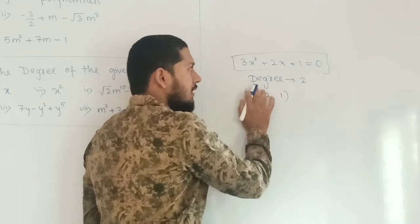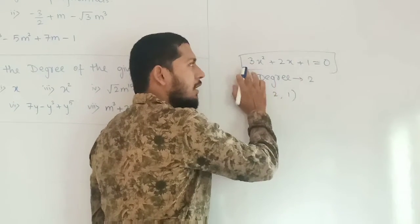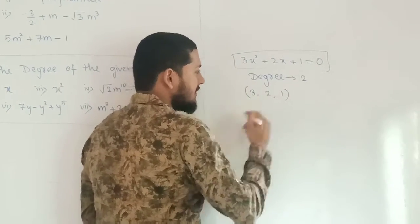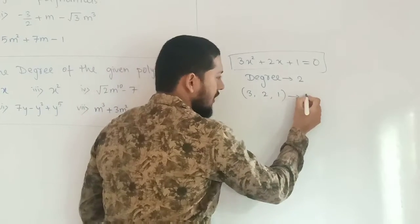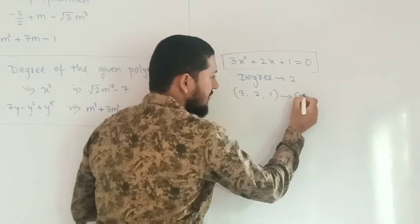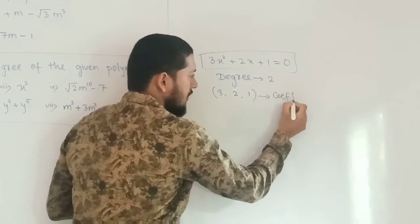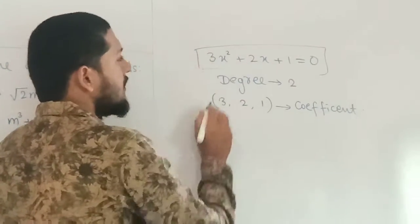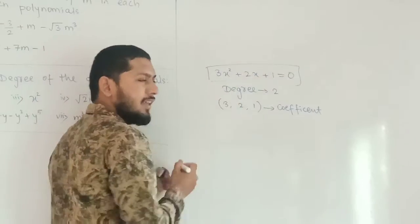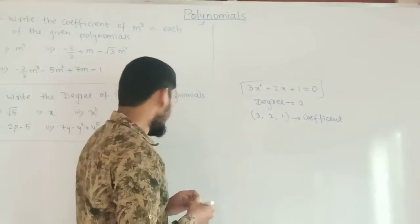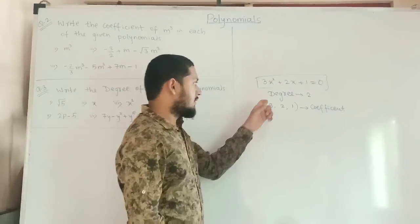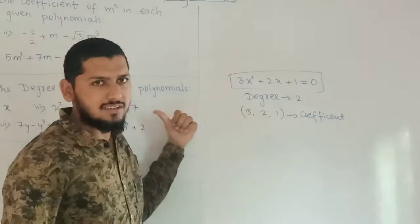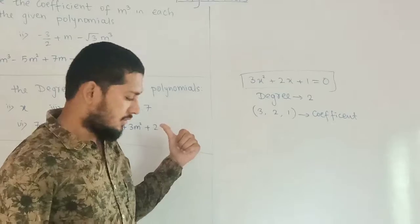The degree is nothing but the highest power of that equation, and the coefficient is nothing but the multiple of the variable. These two types of examples we have to study in this lecture.